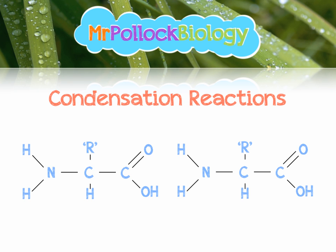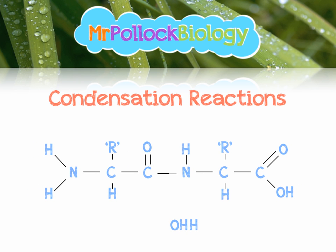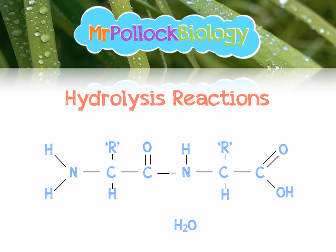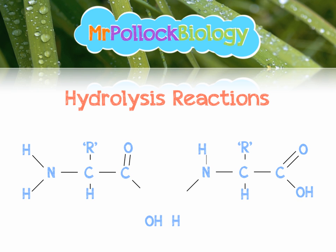For condensation, we start off with two adjacent amino acids and we remove water. That involves the formation of a dipeptide, a peptide bond, and one molecule of water. The reverse of that would be a hydrolysis — we start off with one molecule of water and a dipeptide, and break those bonds to form our two amino acids.